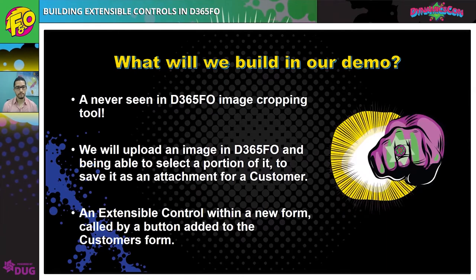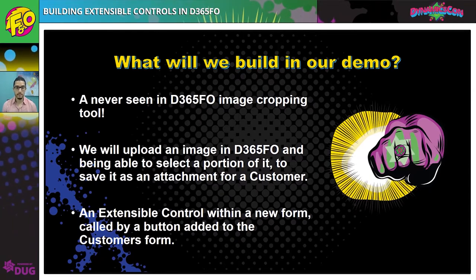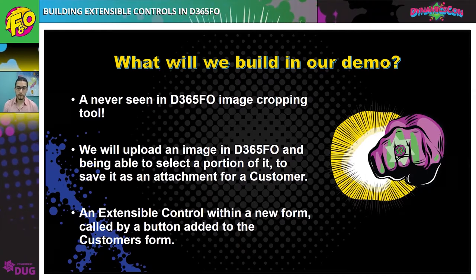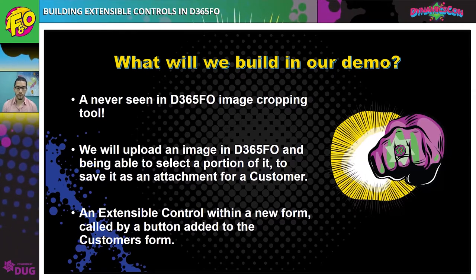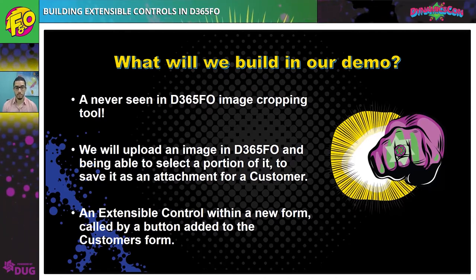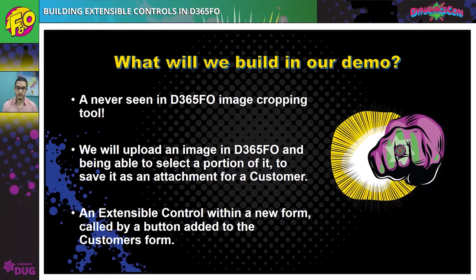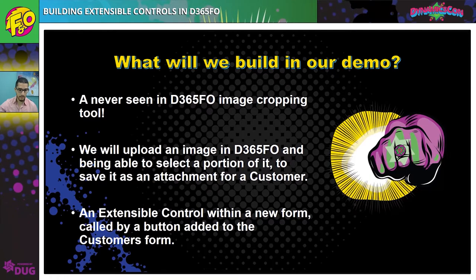In this demo, we're going to create a new extensible control that will allow us to load an image in D365FO, select the portion of it, crop it, and save it as an attachment for an existing customer. I'll assume basic knowledge of X++. Some items are already pre-built to save time — like the new form containing our extensible control, a form extension with a button that calls that form, and some utility classes. There's also a live Q&A chat section, so please put your questions there and I'll answer them after the demo.